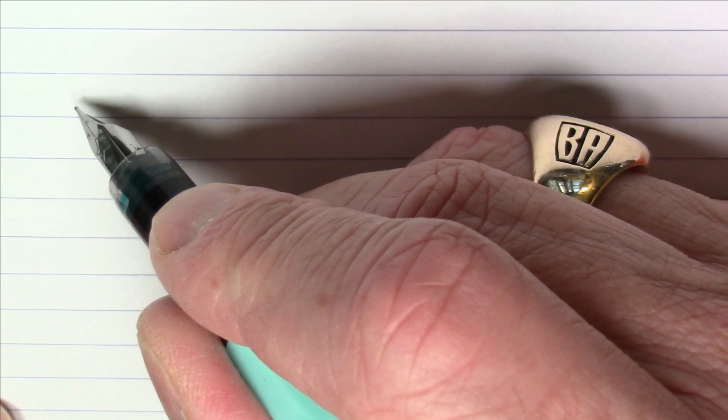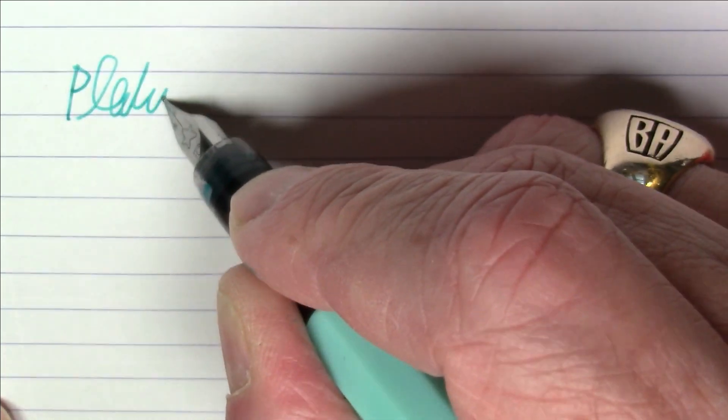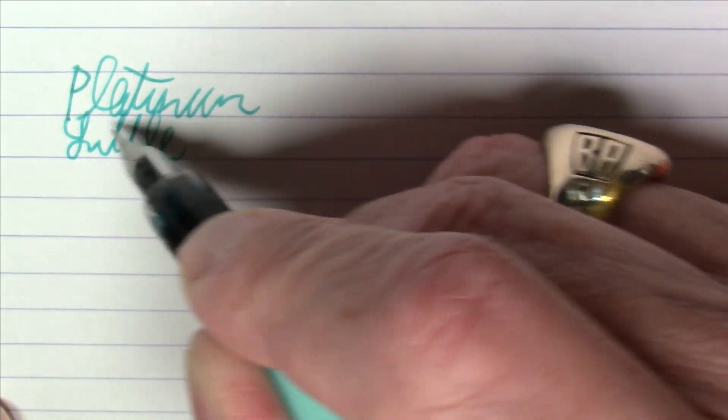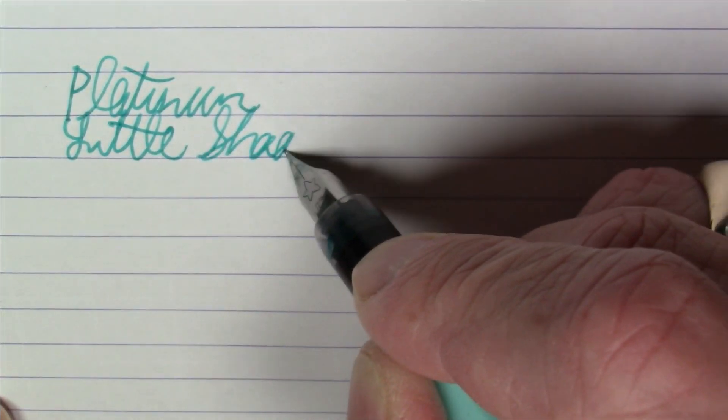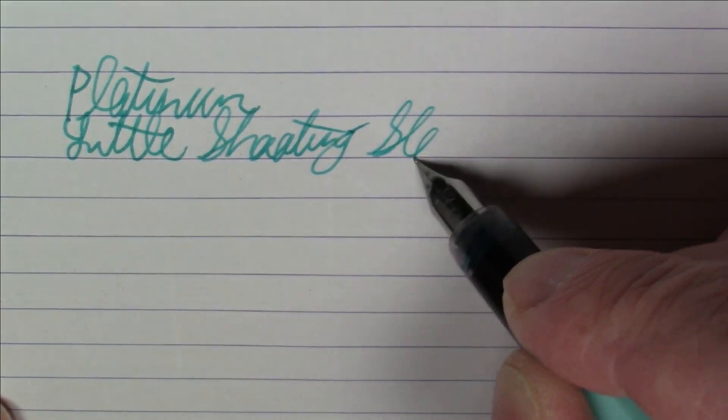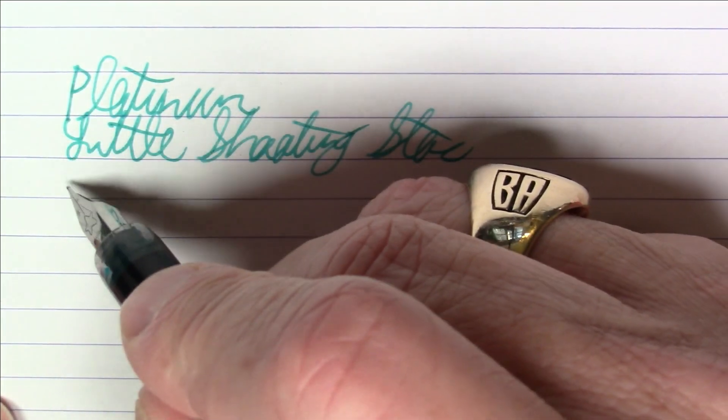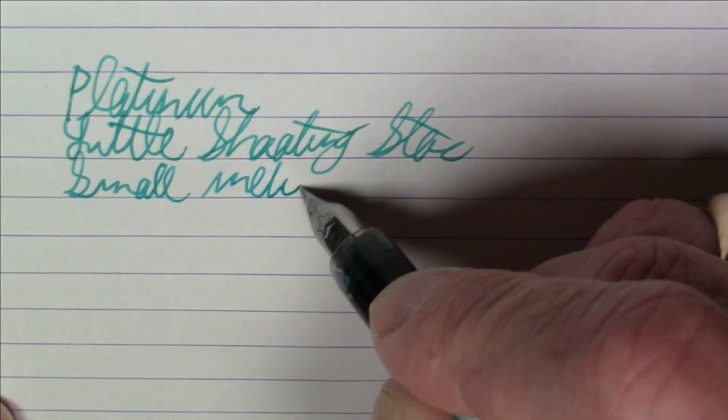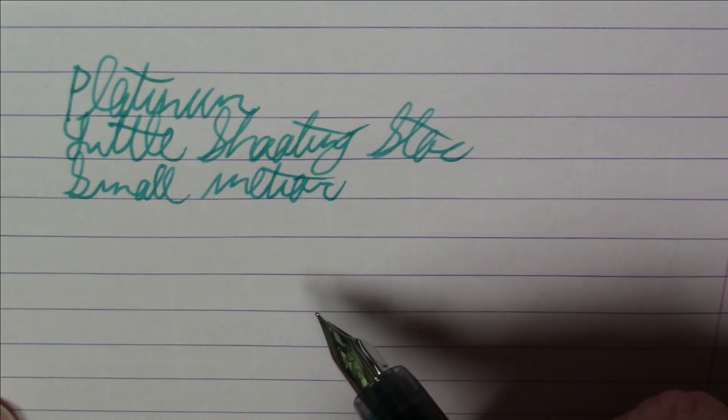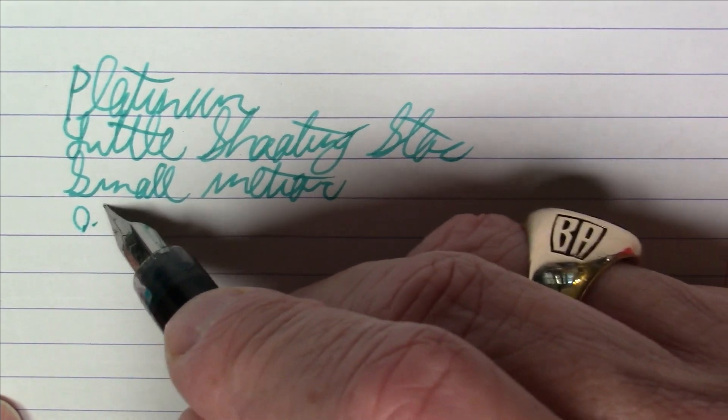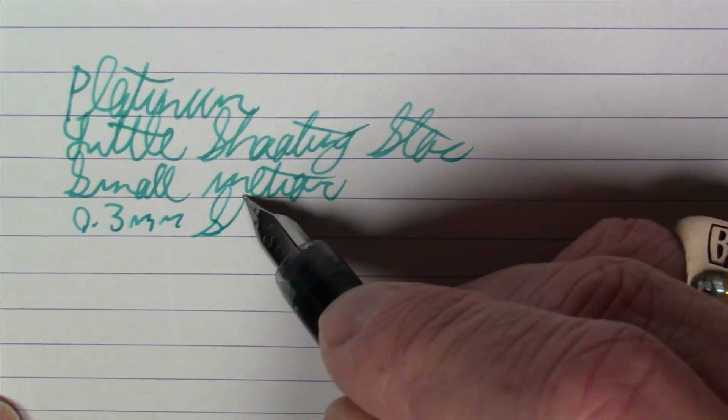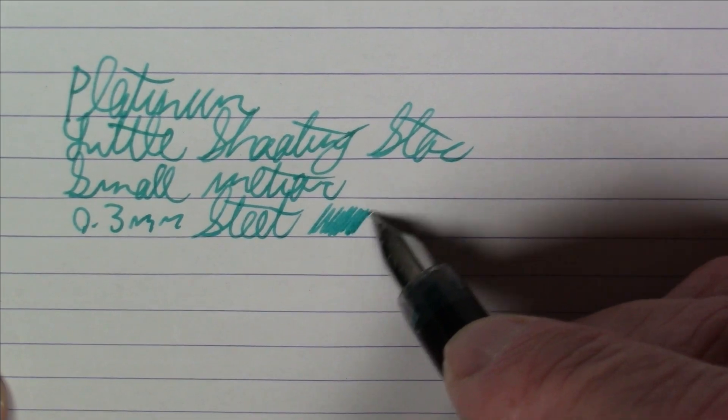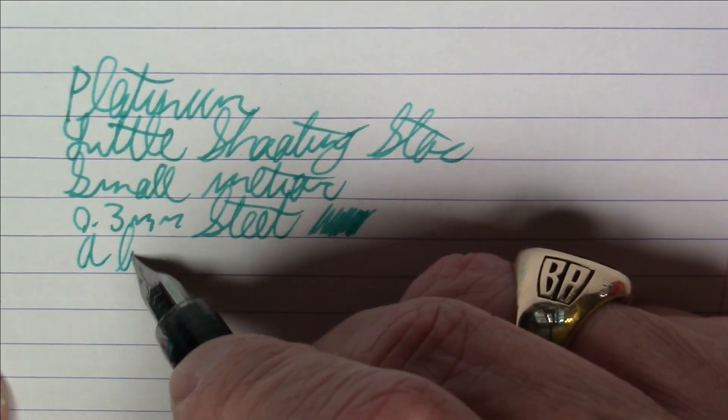Okay, folks, what we're writing with here today is a platinum little shooting star or small meteor, depending on which vendor you buy it from. And this has a 0.3 millimeter steel nib. So if you're familiar with the writing experience of say the platinum preppy, you're going to be familiar with the writing experience on this. It's exactly the same.